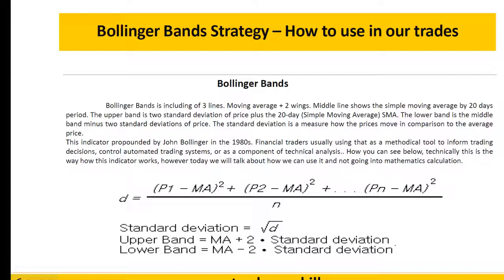Bollinger Bands is an indicator consisting of three lines: a moving average plus two bands. The middle line shows the simple moving average over a 20-day period. The upper band is two standard deviations of price added to the 20-day SMA, and the lower band is the middle band minus two standard deviations. Standard deviation measures how much the price moves compared to the average price. This indicator was introduced by Mr. John Bollinger in the 1980s.